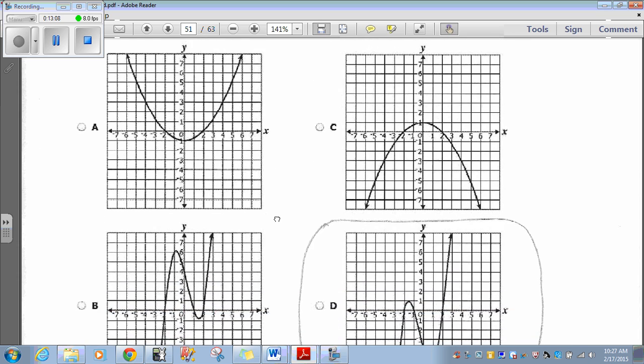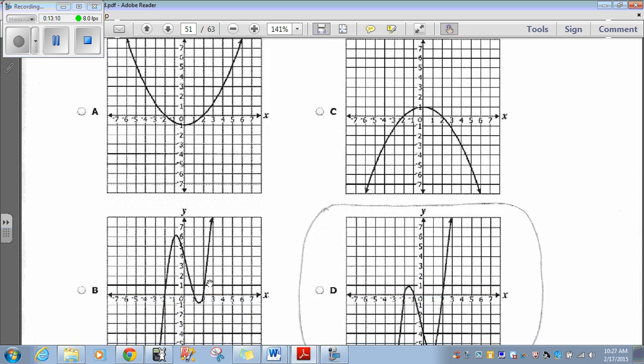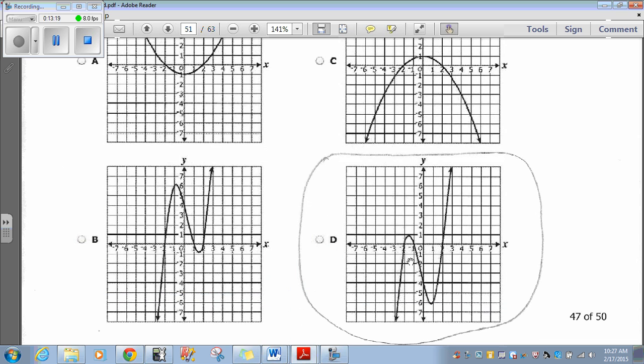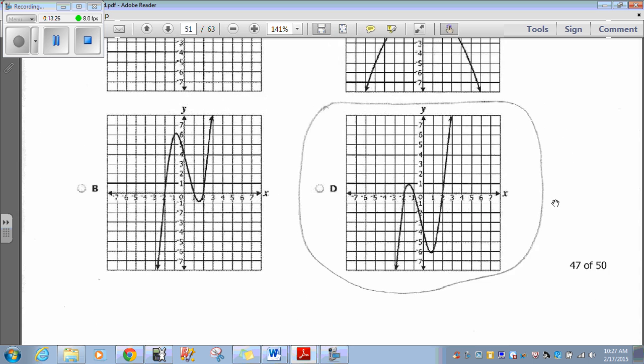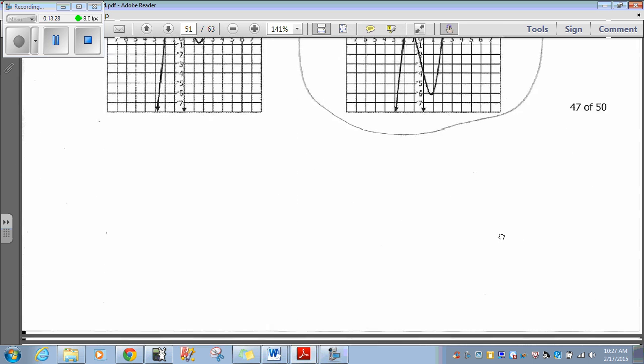This has negative 2, positive 1, 2. So that doesn't work either. The only one with negative 2, negative 1, positive 2 is choice D. You can just look at that one. There's not much to figure out with that one.